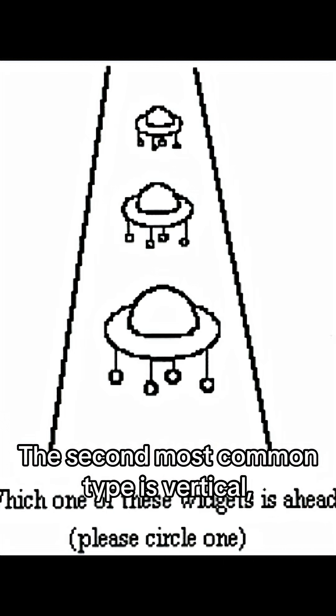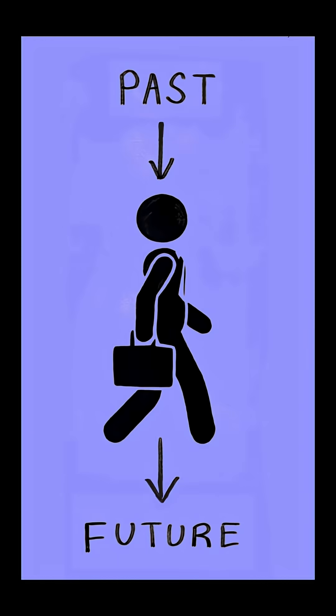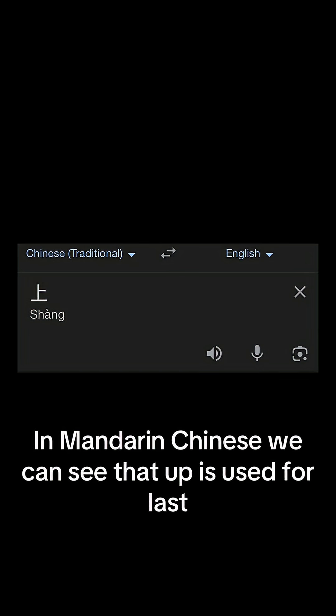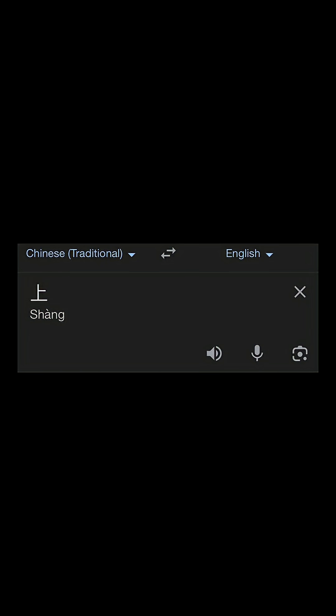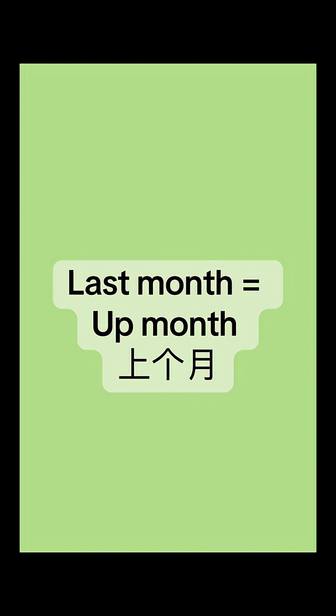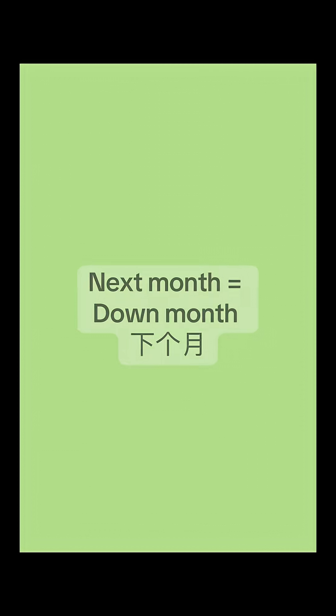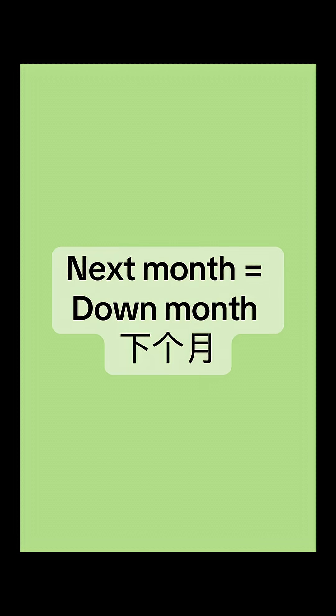The second most common type is vertical, which talks about time flowing from top to bottom. In Mandarin Chinese, 上 (up) is used for 'last,' so 'last month' literally translates to 'up month' (上个月). Similarly, 下 (down) is used for 'next,' making 'next month' literally 下个月.